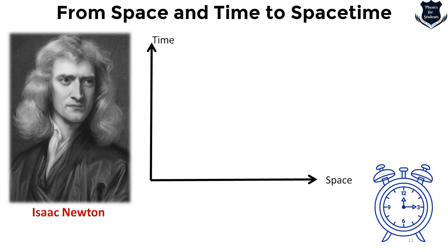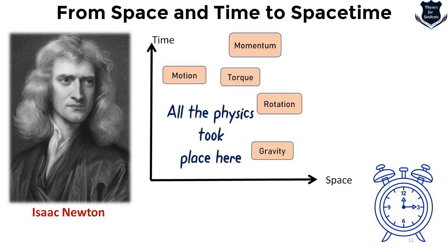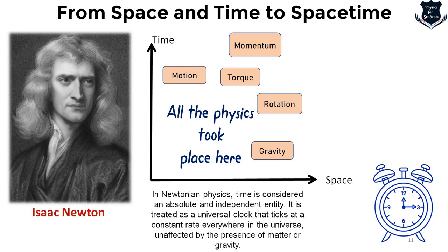In Newtonian physics, time is considered an independent entity — a universal clock ticking at a constant rate, unaffected by the presence of matter or gravity. With the passage of time, Albert Einstein's theory revolutionized the entire understanding. Time and space were unified into one, giving us something called the space-time continuum, and all physics takes place within it.